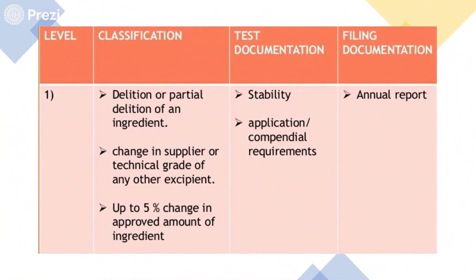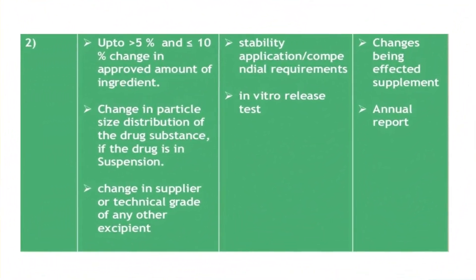For release-controlling excipients, they are further classified into Level 1, Level 2, and Level 3. Level 1 involves change in suppliers, partial removal of an ingredient, or an overall change less than 5%; pharmacopoeial and stability testing are required, results presented in annual reports. Level 2 involves change less than 10% along with particle size distribution change or technical grade change — for example switching from USP to BP or BP to IP; multi-point dissolution studies and in vitro data are needed to show unchanged bioavailability, plus stability testing and annual reports.